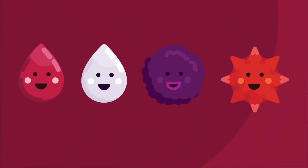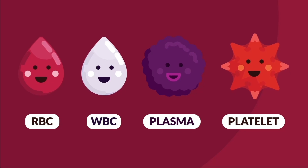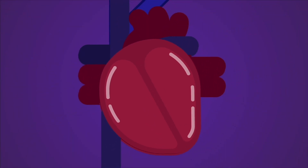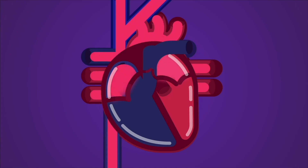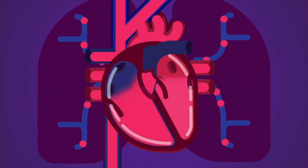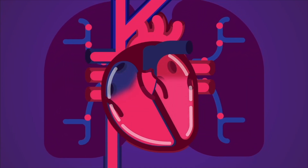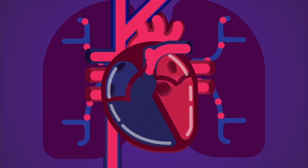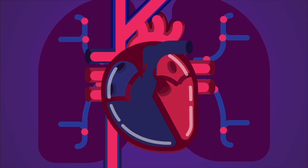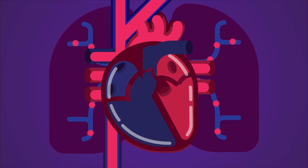The Human Circulatory System consists of the blood, blood vessels, and heart. The valves in the blood vessels and heart prevent the backflow of the blood. This ensures that the blood which is pumped by the heart flows in one direction only — unidirectional — throughout the body.